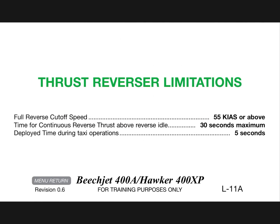Thrust reverser limitations: full reverse cutoff speed 55 knots or above. Time for continuous reverse thrust above reverse idle 30 seconds maximum. Deployed time during taxi operations 5 seconds maximum.